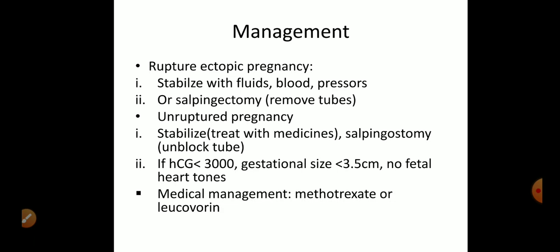For an unruptured ectopic pregnancy, first we stabilize the patient with medicines. The second step is salpingostomy, which means unblocking the tube. In salpingostomy, the area where the ovum is implanted is removed and the tube is cleared, allowing it to remain intact rather than being removed entirely.